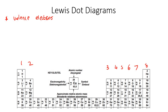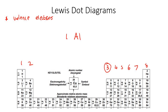Check how easy this is. If I ask you to draw the Lewis diagram of aluminium, you would just write Al, then say it has three valence electrons, so you'd place one, two, three. There are four different places you go to — four different areas. That's the first area, second area, third area, and fourth area.